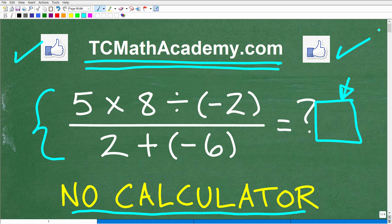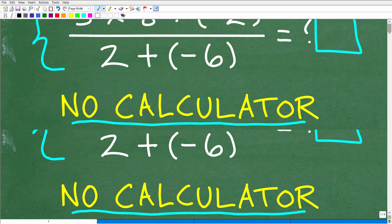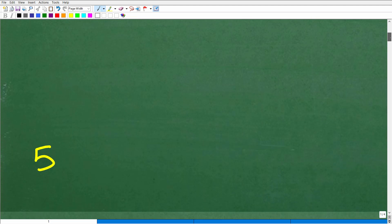Okay, so what do we have here? We have 5 times 8 divided by negative 2, all of this divided by 2 plus negative 6. So let's go ahead and take a look at the answer right now. The correct answer is 5.